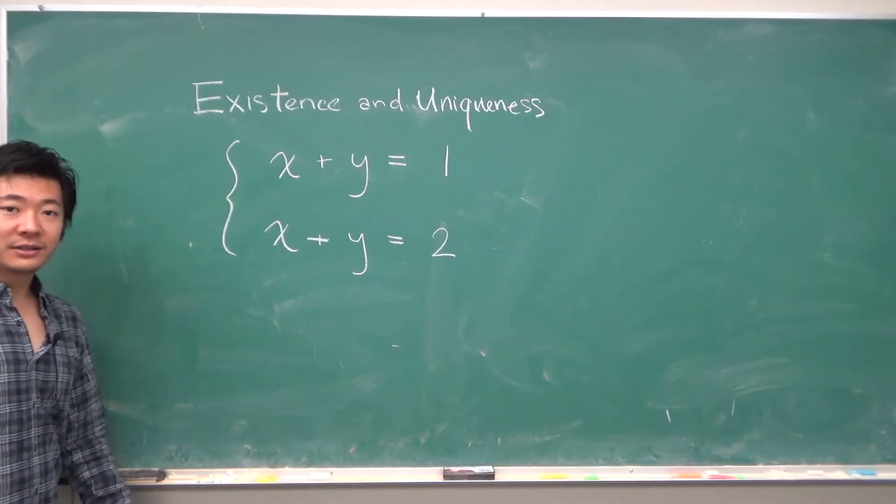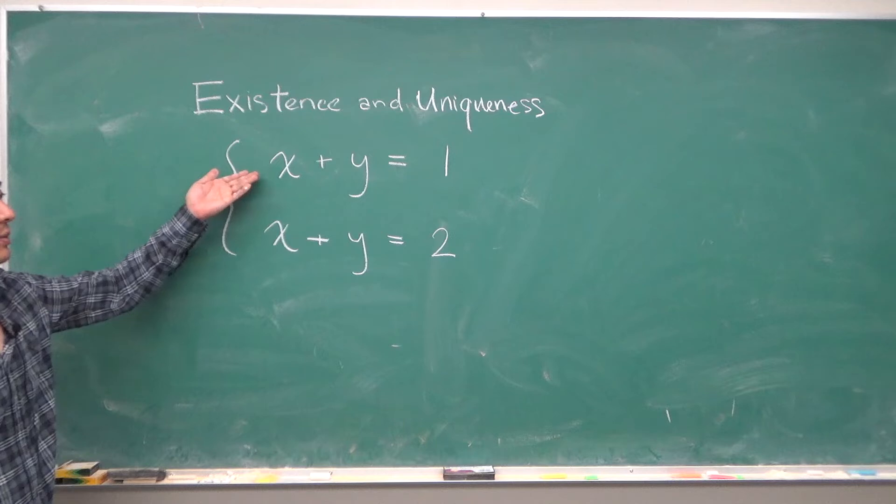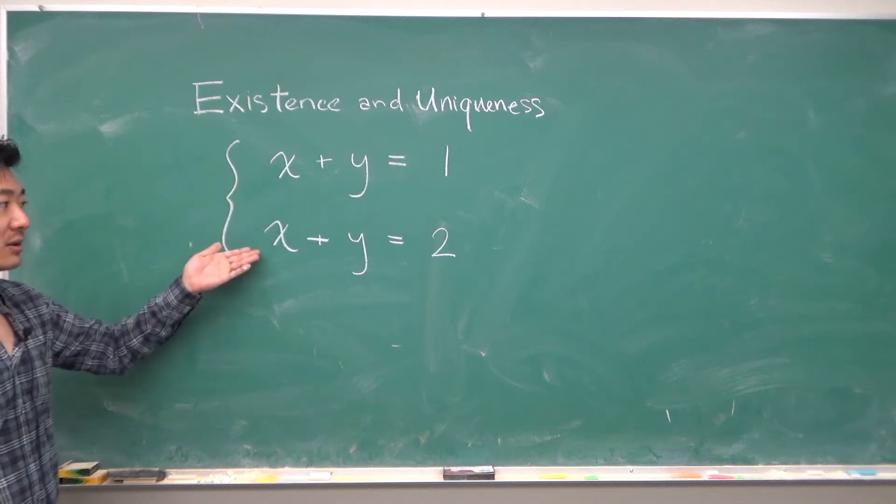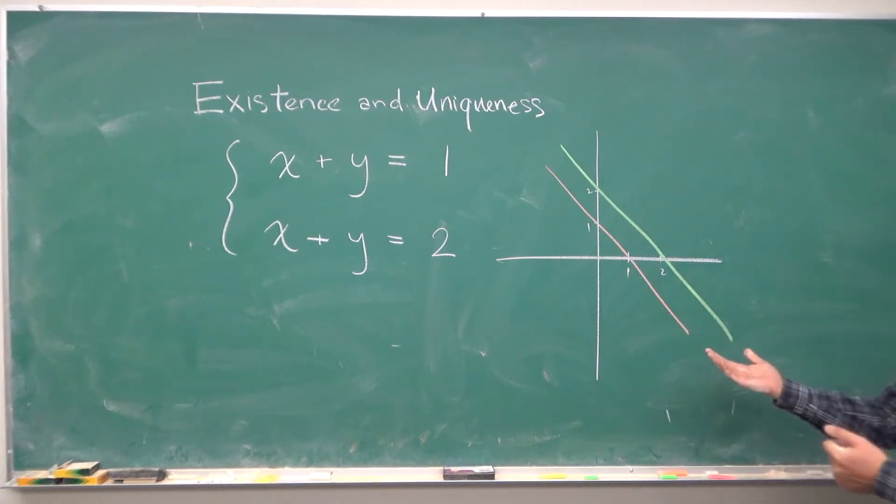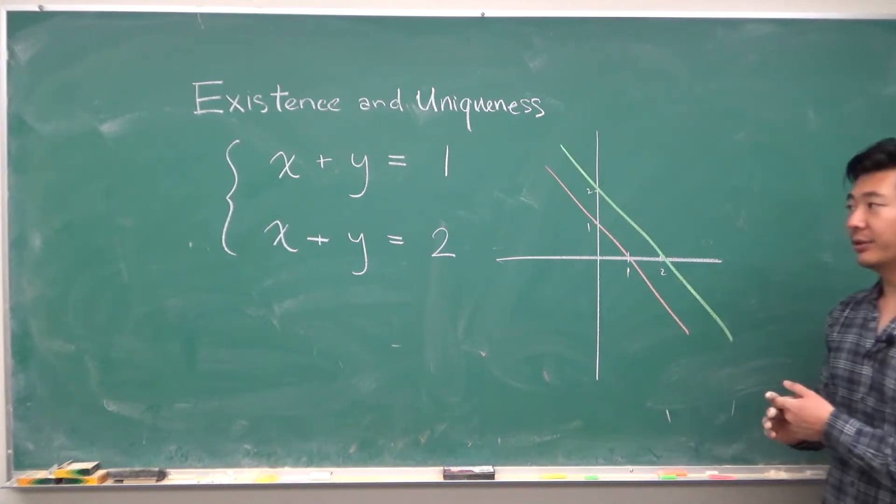If we modify our system into something like x plus y equals 1 and x plus y equals 2, then the graphs will look like this.